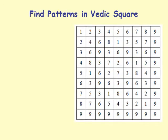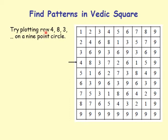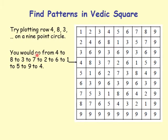Let's find patterns in the Vedic square. Take row 4: 4, 8, 3, 7 — which comes from the fourth multiplication table. 4 times 1 is 4, 4 times 2 is 8, 4 times 3 is 12 whose digit sum is 3, and so on. Tracing on a 9-point circle: 4, 8, 3, 7, 2, 6, 1, 5, 9, and back to 4 — you have traced a 9-point star.